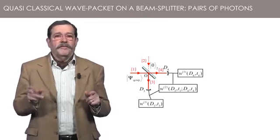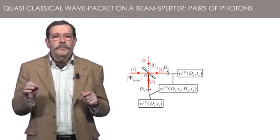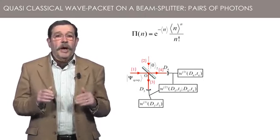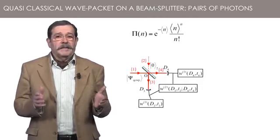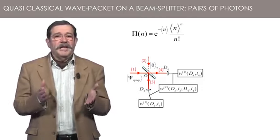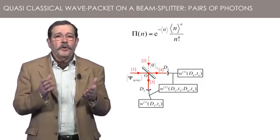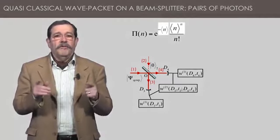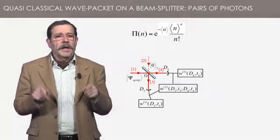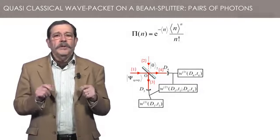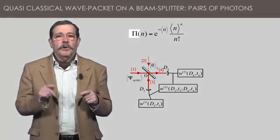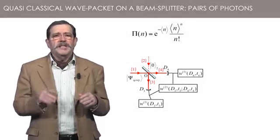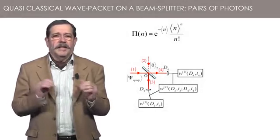In section 2, we have shown that for any multimode state, the photon distribution is a Poisson distribution. The formula applies, in particular, to a wave packet. It is written here in the standard form for a Poisson distribution, where the only parameter is the average number of photons. Here, I use the letter pi for the probabilities related to photon numbers, since the curl p is already used for the probabilities of detection.